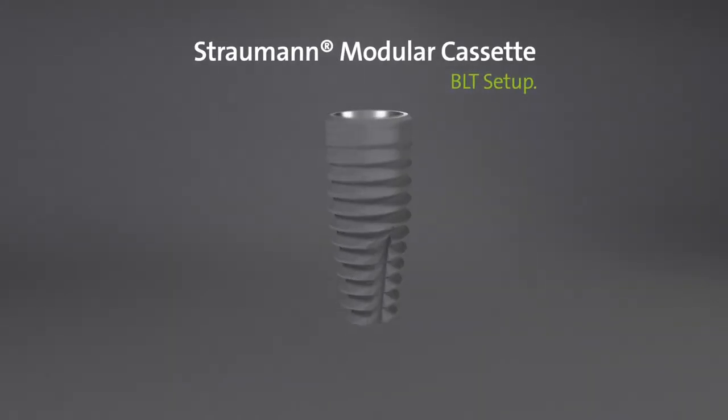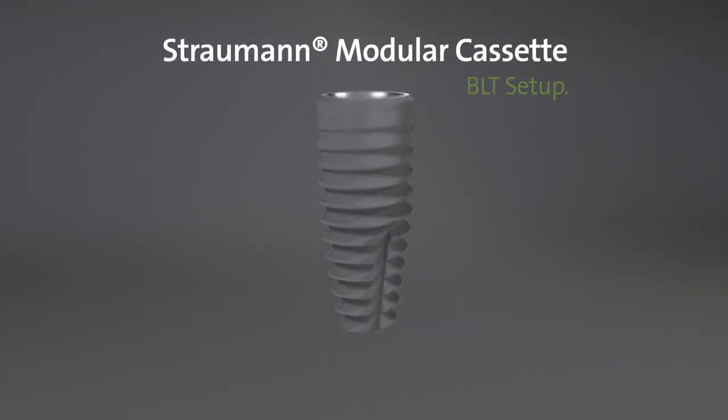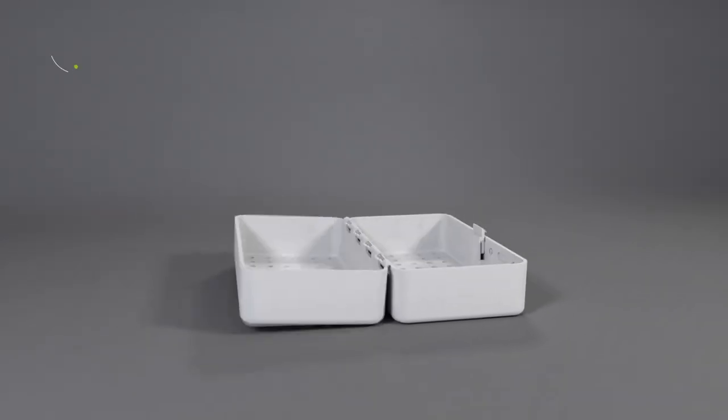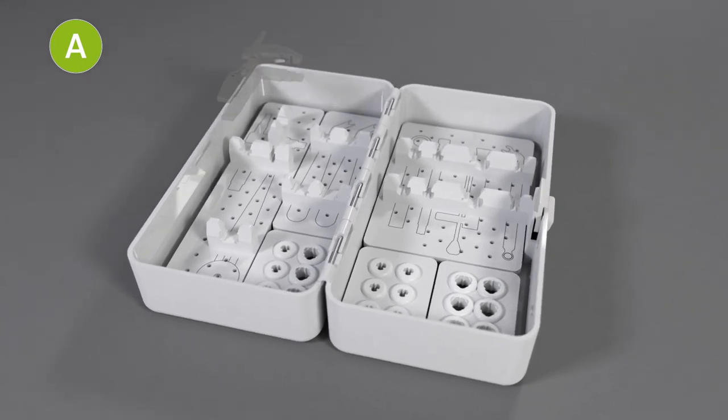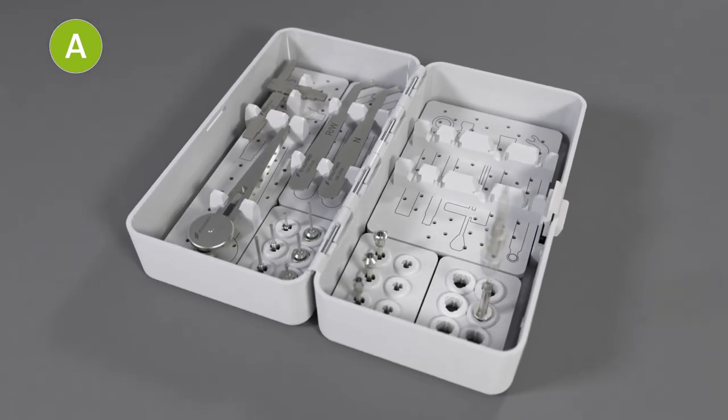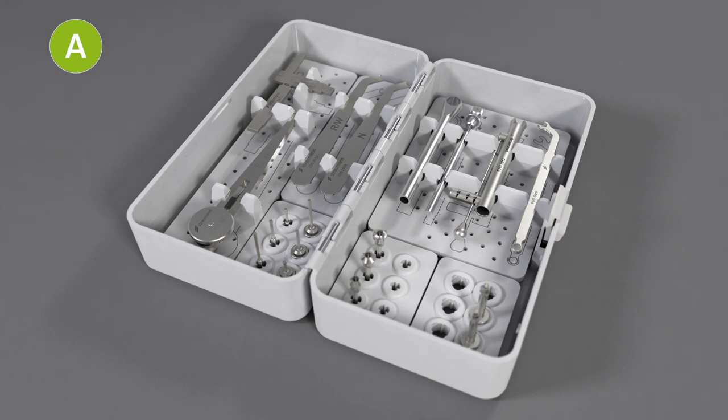Let's set up the cassette for BLT. Click the trays into the A module and put the instruments into the silicon holders. The A module is set up.